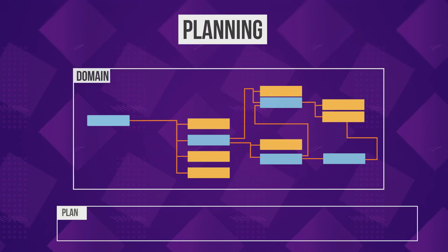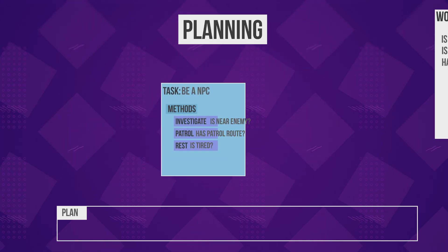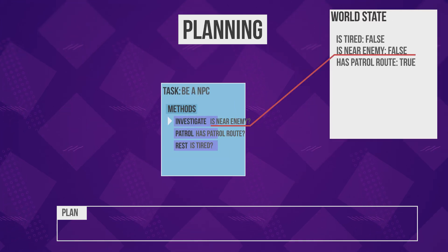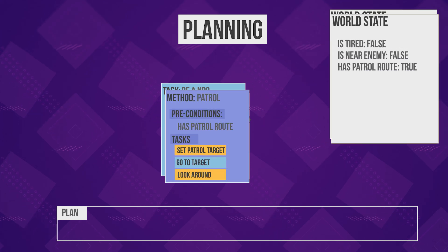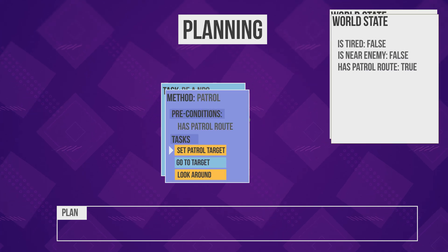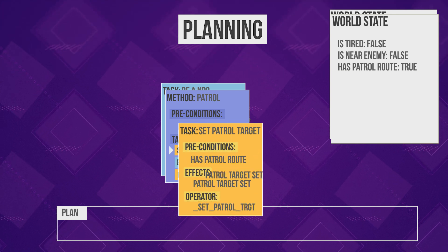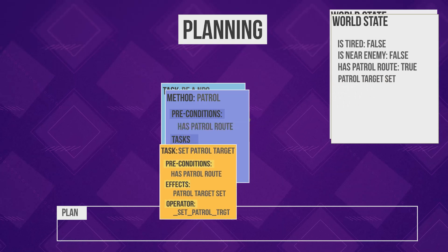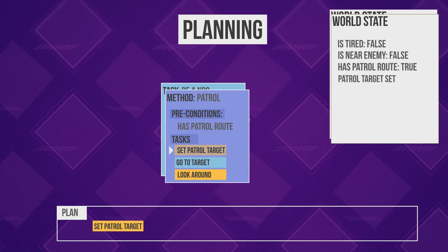The plan starts at the root of the domain. It checks the method's conditions against a copy of the world state. The first method to pass the checks will be chosen. Then it iterates over the method's tasks. If it's a primitive task, it checks its conditions against the world state, and if it passes the checks, it applies the effects to the state.